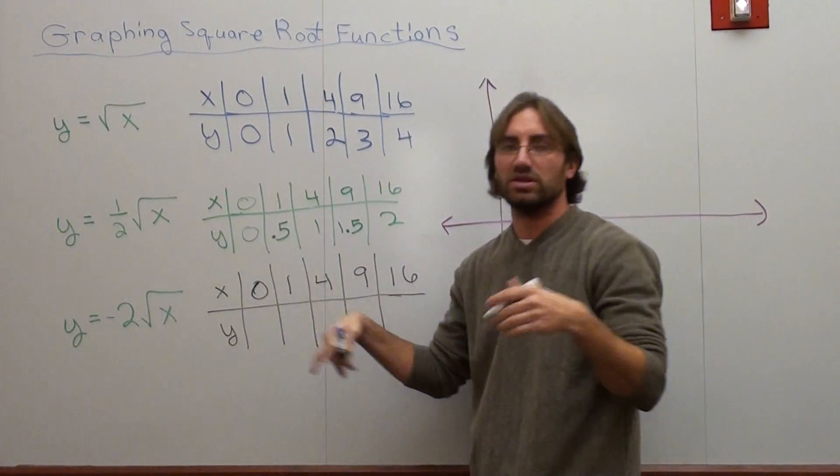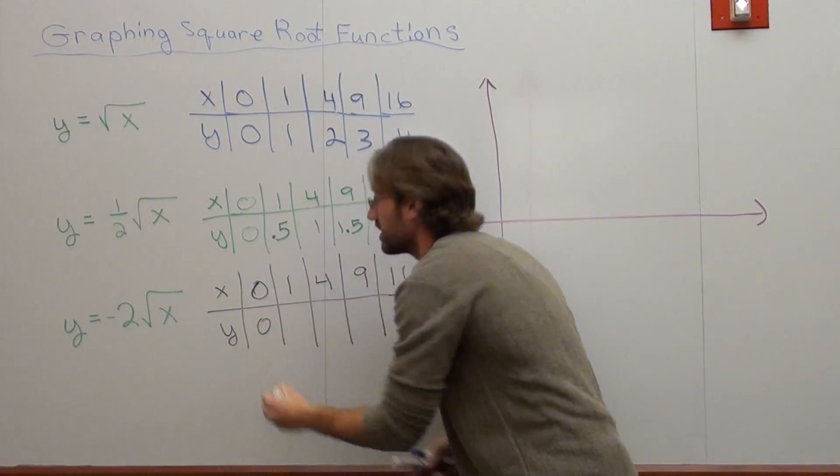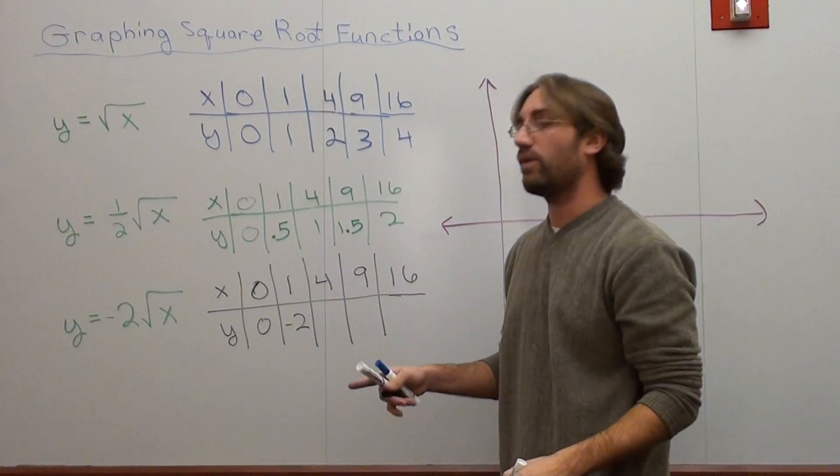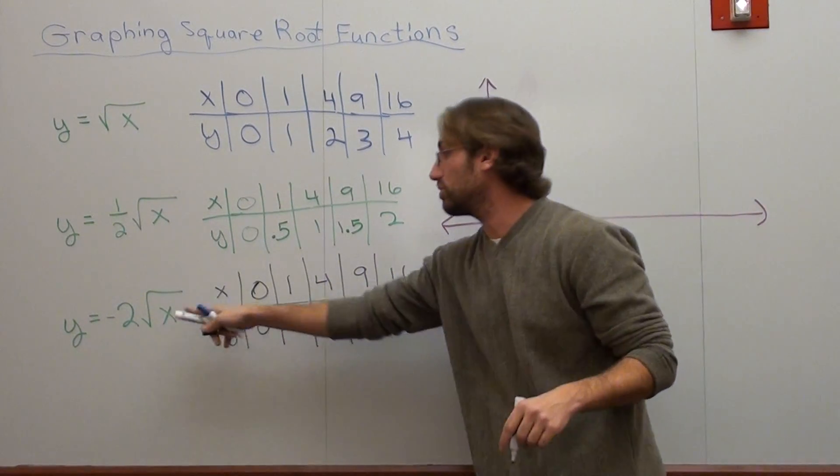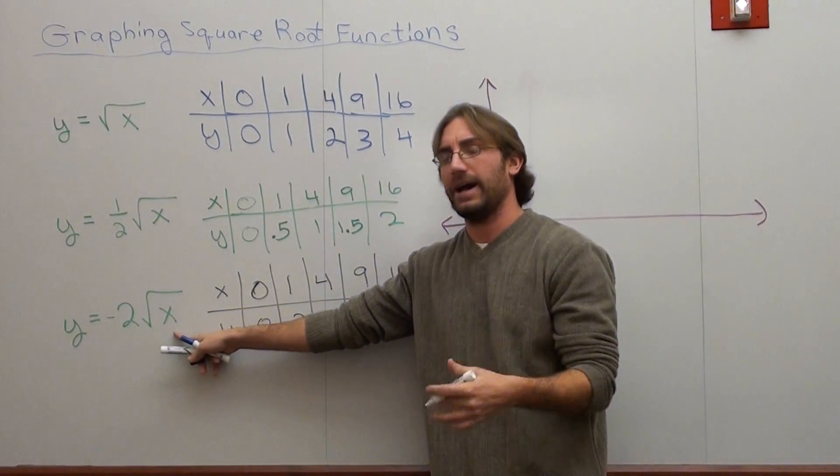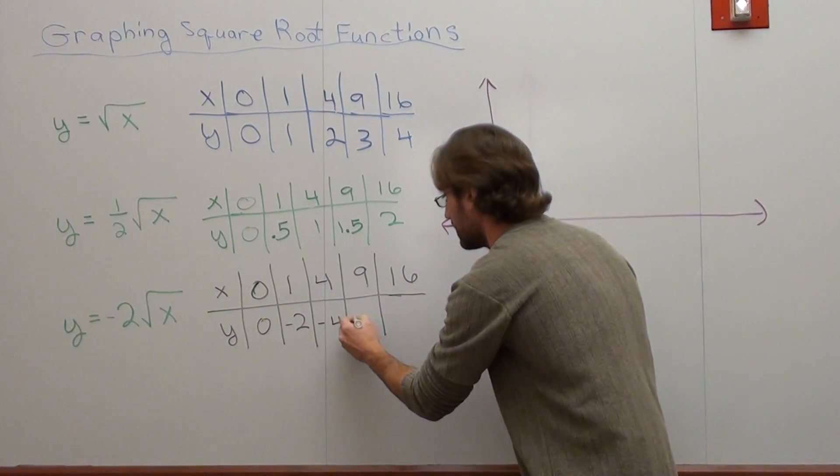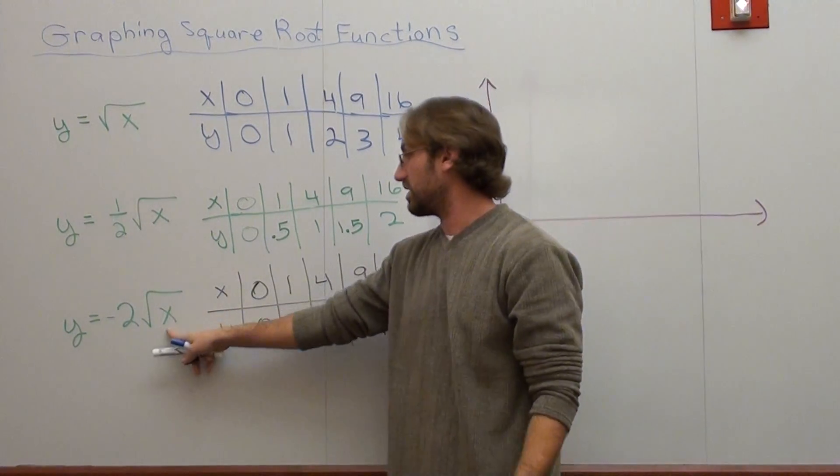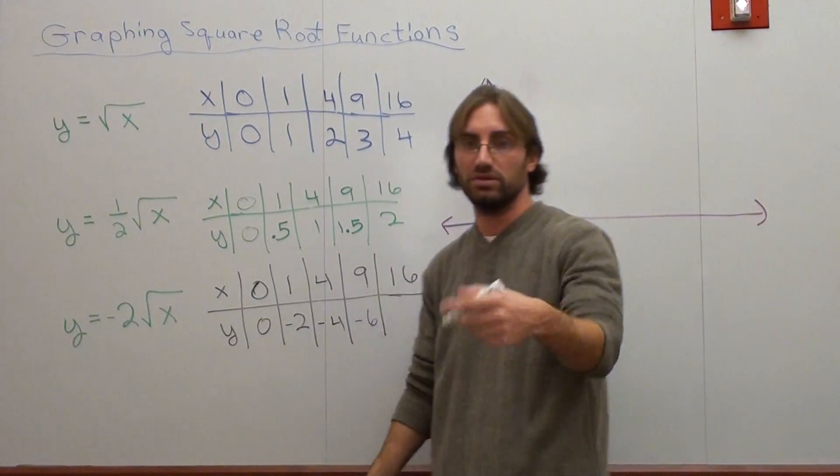When I substitute in zero, zero times negative two is zero. When I substitute in one, it's negative two. When I substitute in four, square root of four is two times negative two is negative four. When I substitute in nine, square root of nine is three times negative two is negative six. And this one should be negative eight, but let's just double check. Square root of 16 is four. Four times negative two, negative eight.